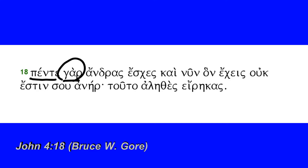'Andros' — this is the accusative plural of 'aner,' which is the word for man, and in this case means husbands. It's the accusative case, plural here, for five husbands.